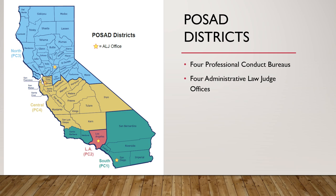We have four professional conduct bureaus covering the state, and we are calling these districts — not regions, to avoid confusion with the existing regional map. So these are districts one through four. The stars on the map represent the administrative law judge offices. There are four ALJ offices in the state: Sacramento, Oakland, Los Angeles, and San Diego — which works out well having four professional conduct bureaus and four ALJ offices.